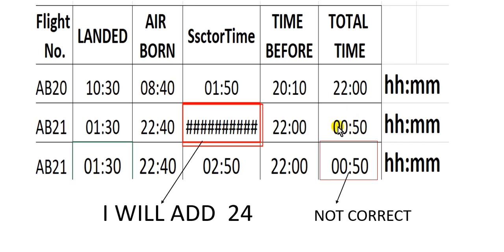If I want to solve this problem, I can add 24 — because this is a new day, so I add 24 to get 25. Now 25 is bigger than 22, so the computer can solve this. Add plus 24 and the calculation works. But I still have another problem with the total time.